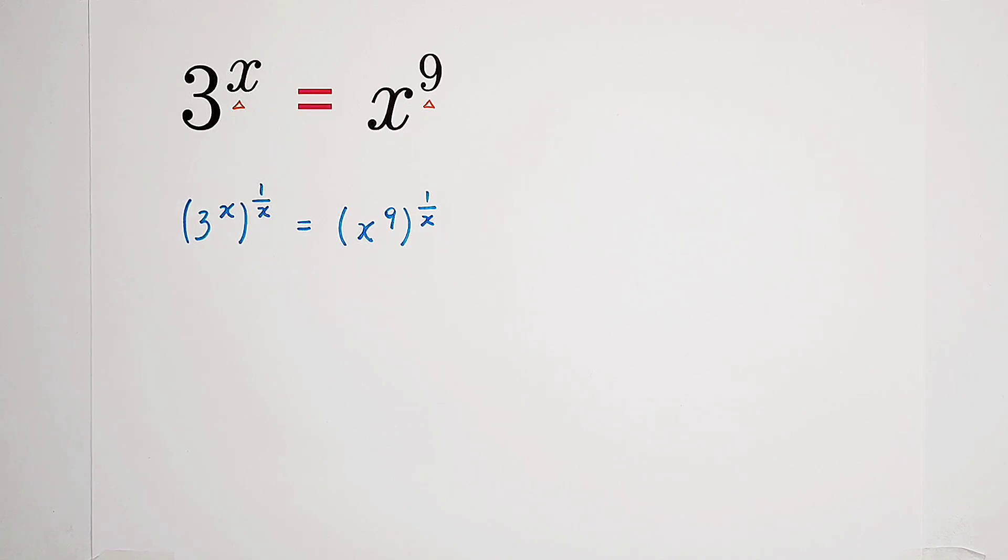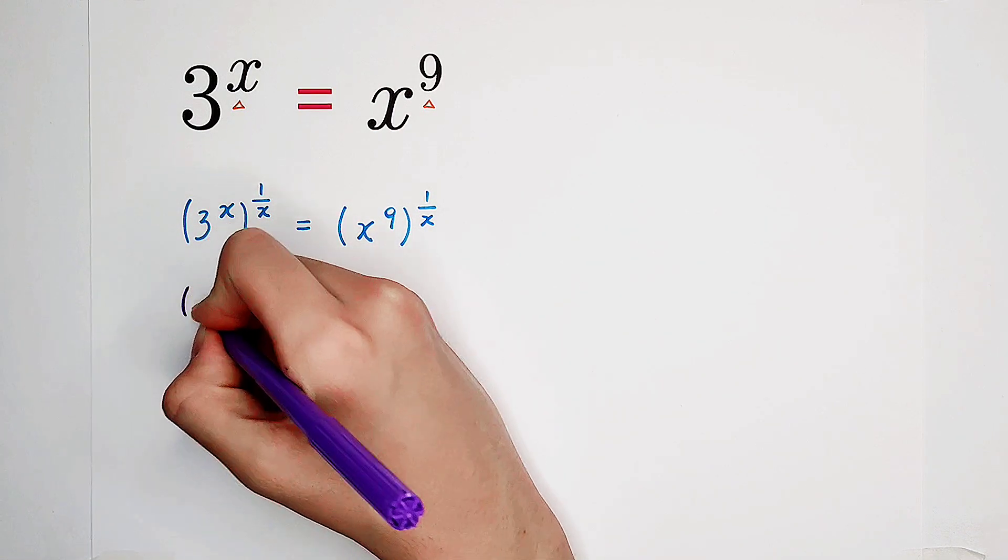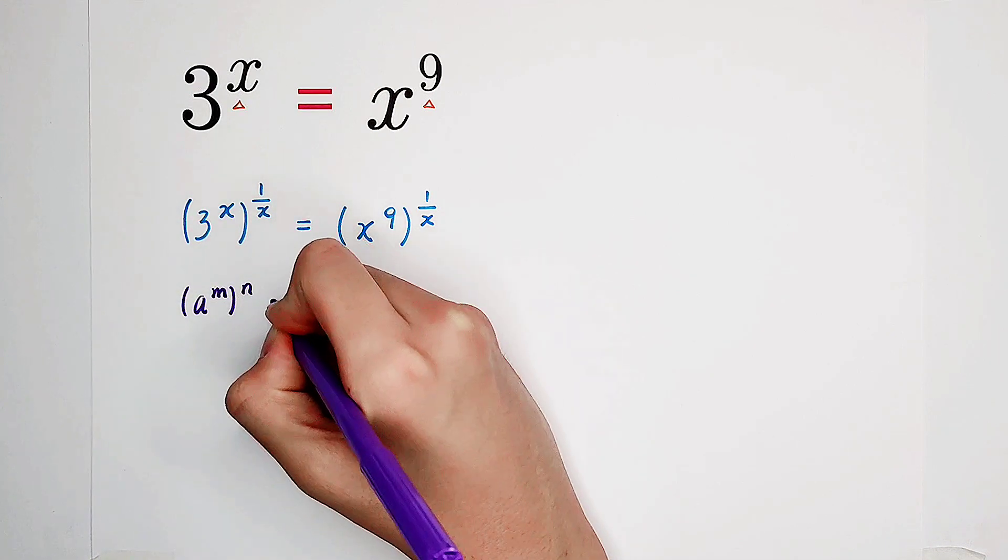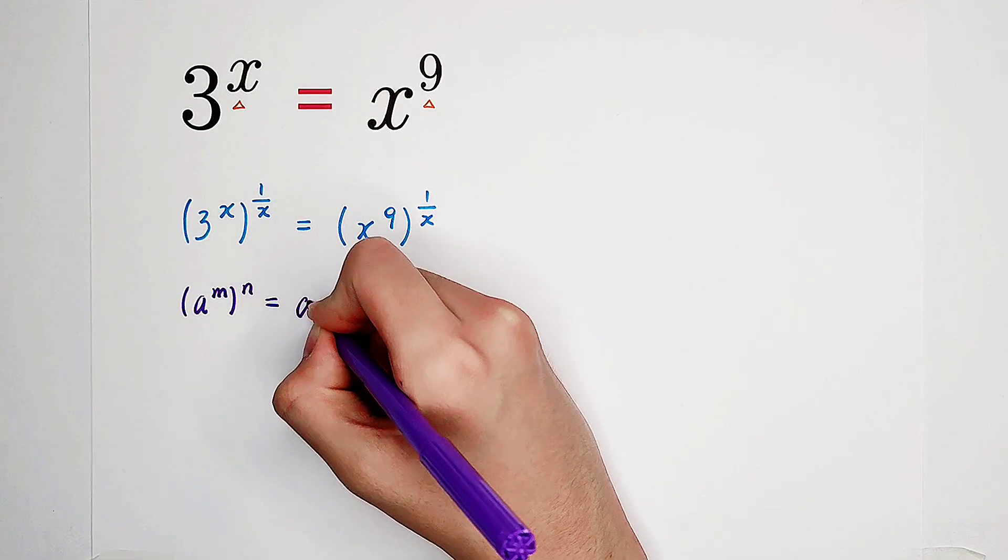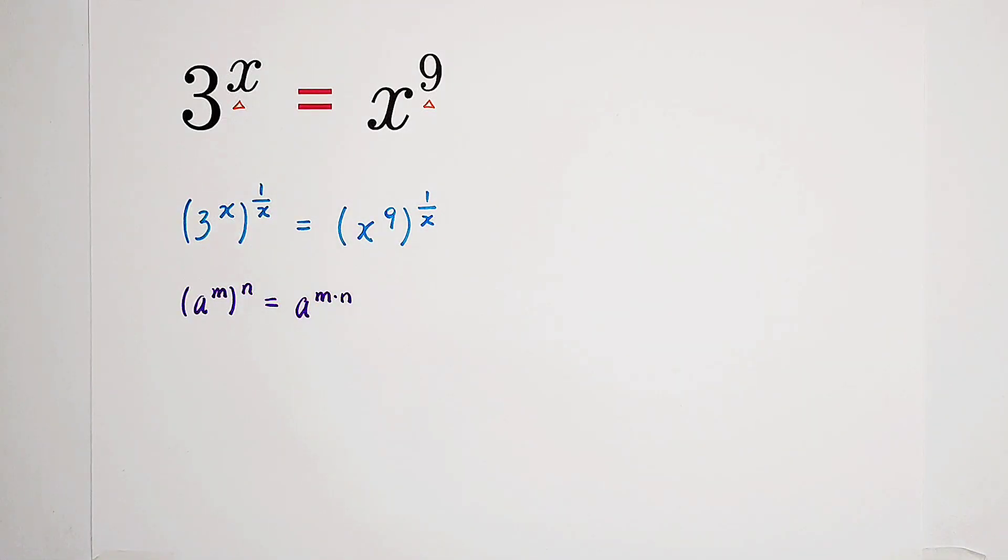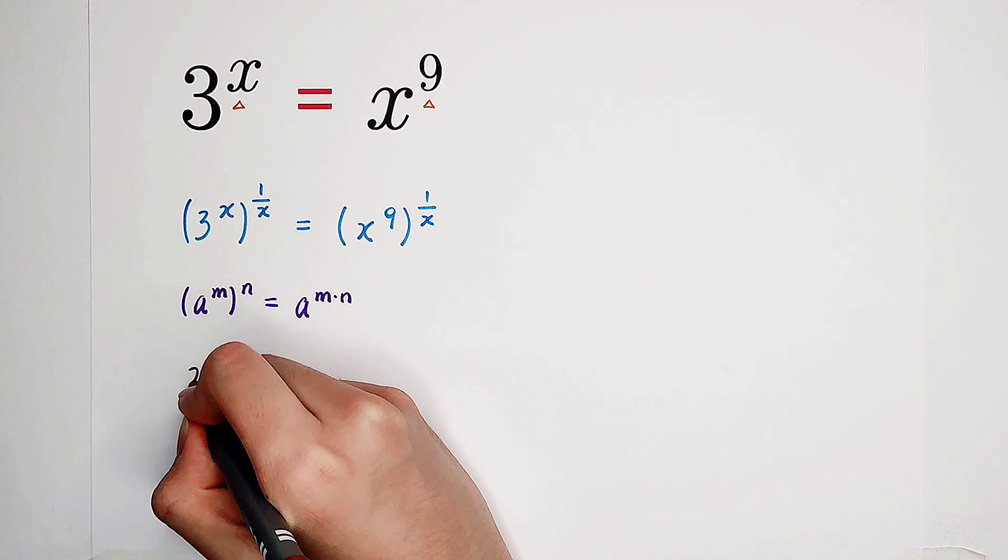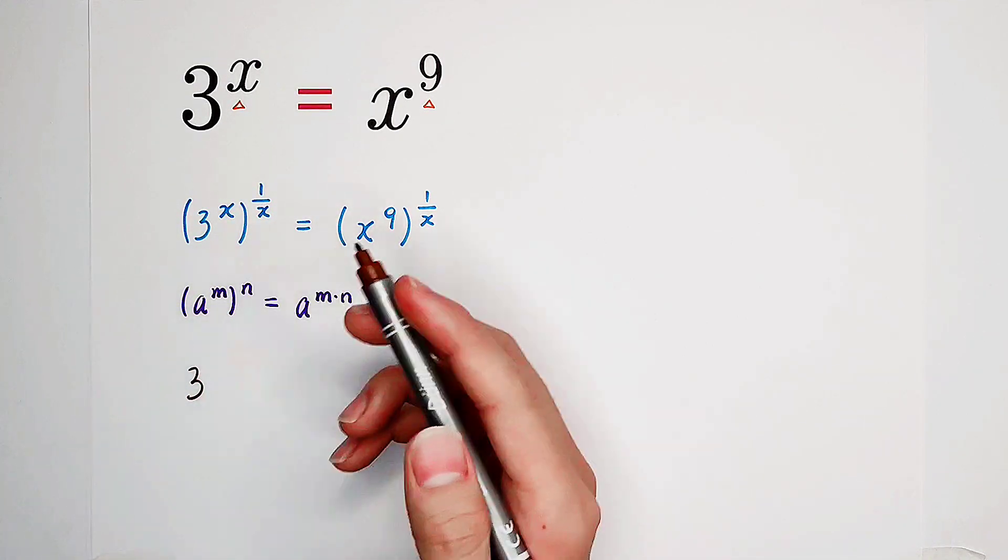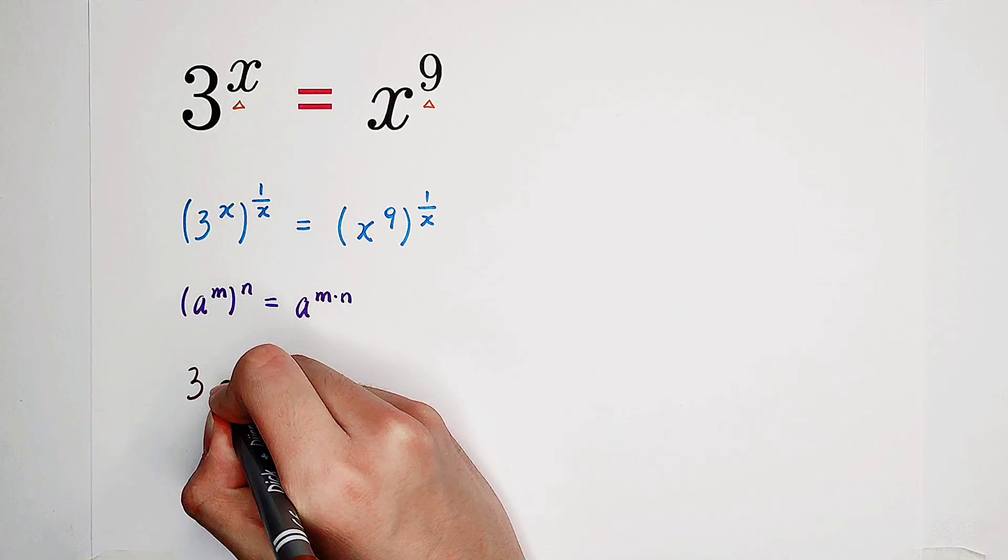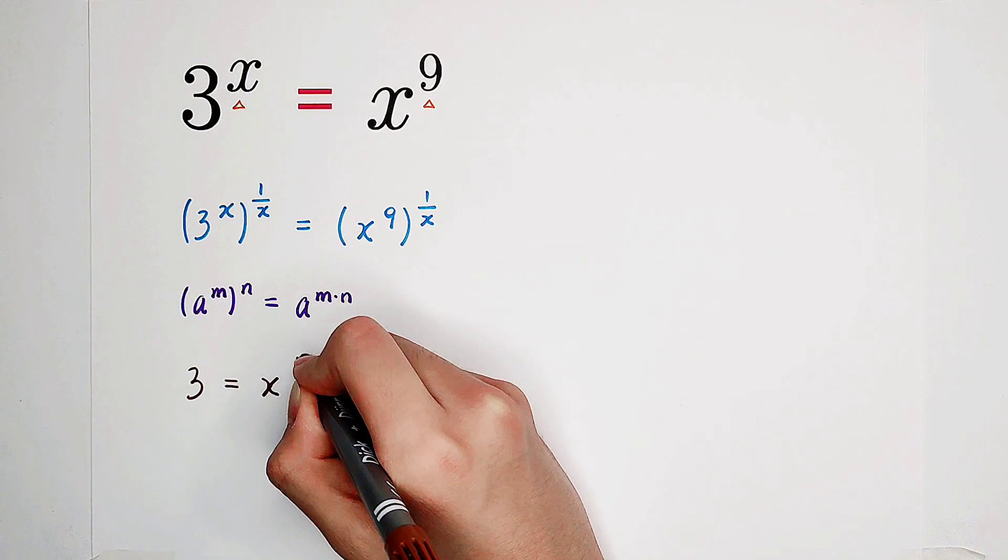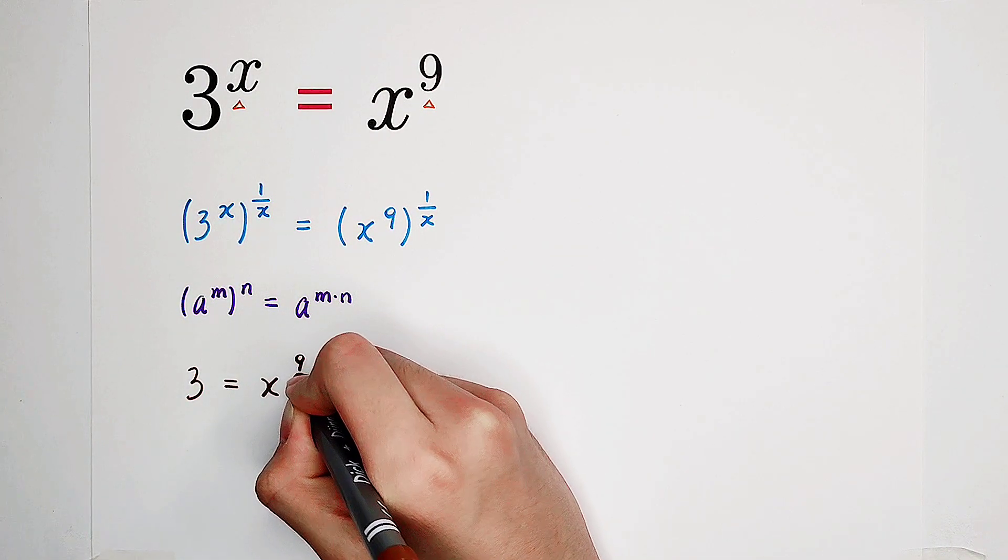Since we have a formula, that is, a to the power of m then to the power of n equals a to the power of m times n. So now we can use that. So we have 3 to the power of x times 1 over x is 1. So 3 equals x to the power of 9 over x.